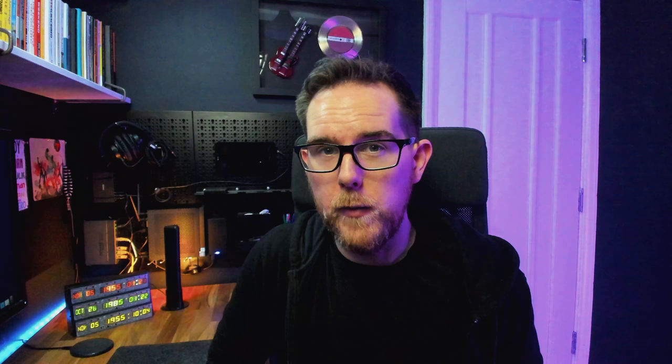In REST, we use what we call the HTTP verbs: POST, GET, PUT, PATCH, and DELETE. So if you imagine you're creating a users endpoint, you're going to have a POST endpoint whenever you want to create a user, and you're going to have a GET endpoint to be able to get the user's details.